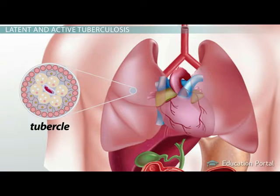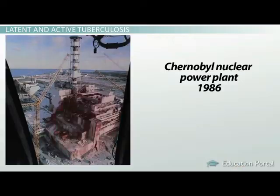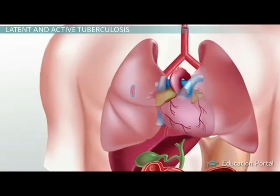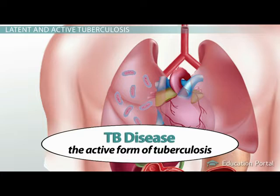The tubercle is obviously what gives this disease its name. However, if a person's immune system is compromised due to something like an HIV infection, then these granulomas will be a serious concern. Likewise, with no granuloma formation, the tuberculosis-causing bacteria will be able to multiply and spread, causing the active form of tuberculosis to occur. We term this active form more technically as TB disease.